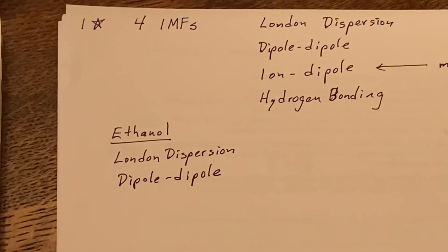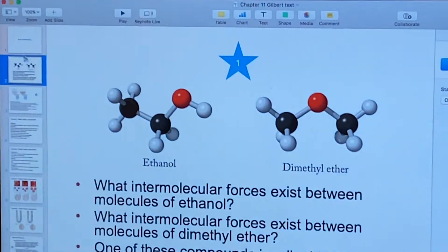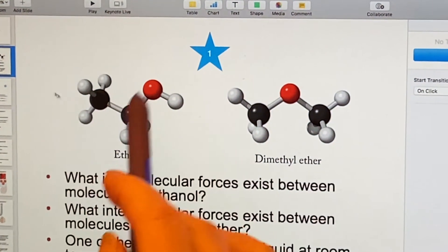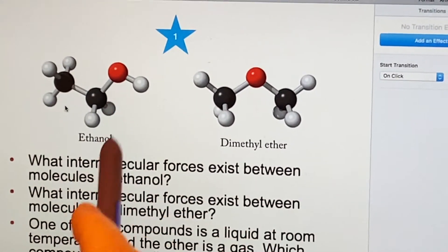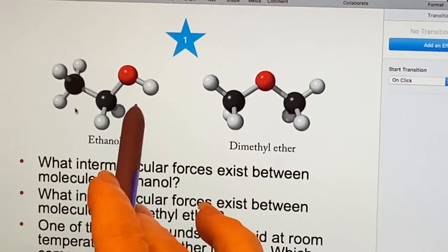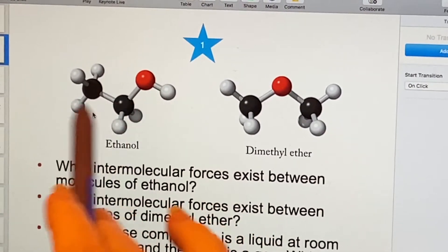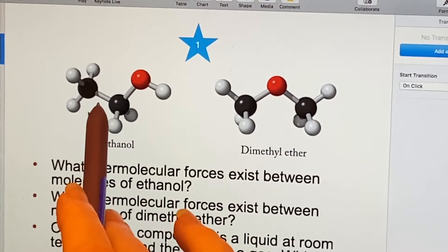But the other thing that we have in here, remember, this is a pure sample. So one thing we can be sure we don't have is ion dipole, because it's a pure sample of this. Not two different things. So no ion dipole.